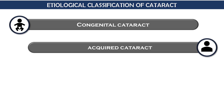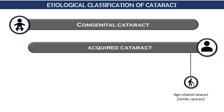Acquired cataract is further of different types. Acquired means after birth. After birth, cataract can form with age, because the lens undergoes changes throughout life as it grows. The cataract which is age-related is known as senile cataract.